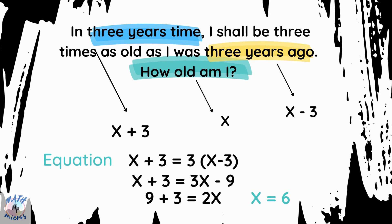You can cross verify the answer by substituting logically in the problem. So, in three years time, it will be the current age plus 3, which is 6 plus 3, 9, right?